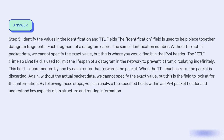Step 5: Identify the values in the identification and TTL fields. The identification field is used to help piece together datagram fragments; each fragment of a datagram carries the same identification number. Without the actual packet data, we cannot specify the exact value, but this is where you would find it in the IPv4 header. The TTL (Time to Live) field limits the lifespan of a datagram in the network to prevent it from circulating indefinitely. This field is decremented by one by each router that forwards the packet. When the TTL reaches 0, the packet is discarded. Without the actual packet data, we cannot specify the exact value, but this is the field to look at for that information.